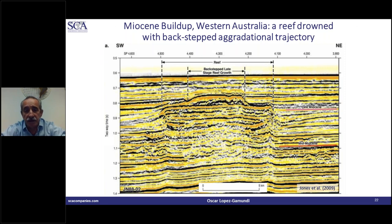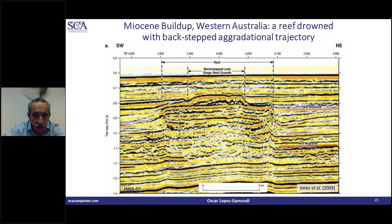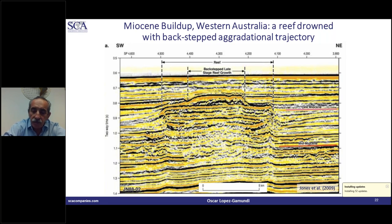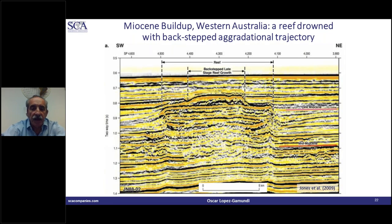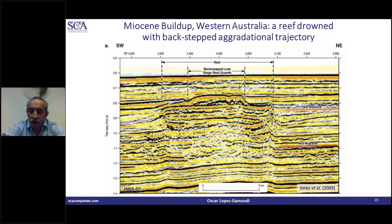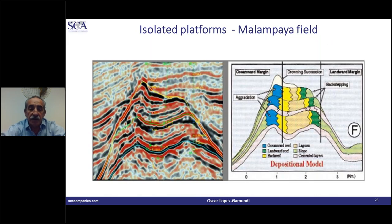Here is another case from Western Australia where you can clearly see back-stepping — the onlap on the southwest corner on the left — and how it jumps all the way to the next reef growth stage. This is very similar to the first case we saw, and you can see how it is drowned later by clastic sedimentation. These geometries are the ones you need to look at in order to identify isolated carbonates.